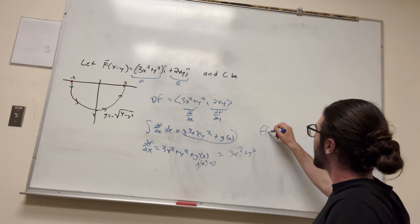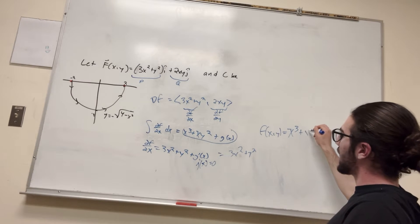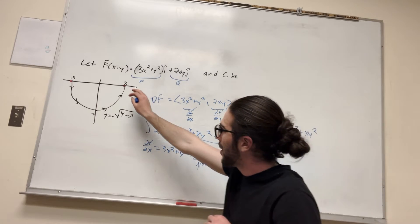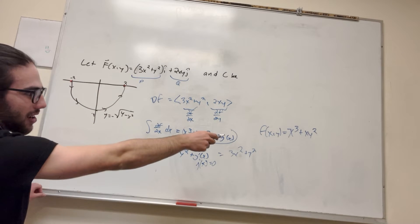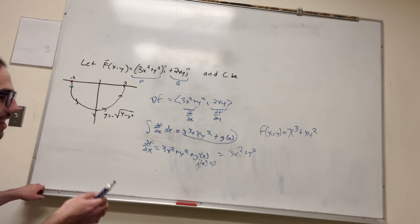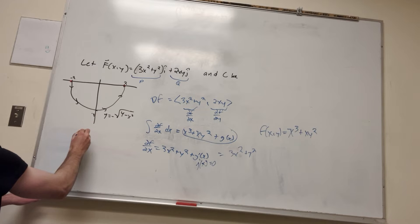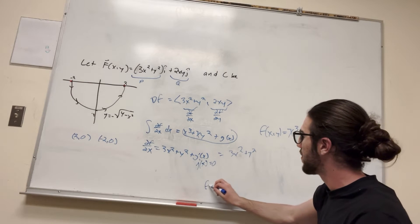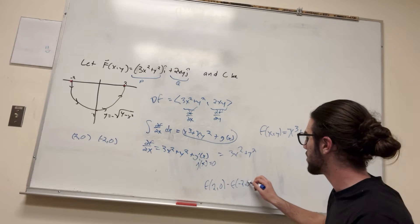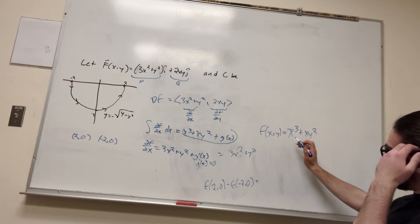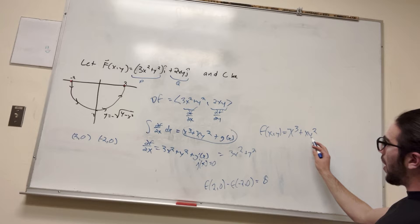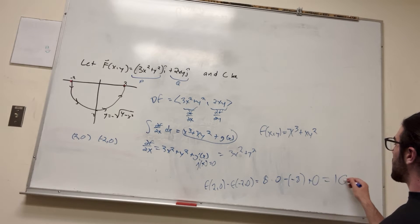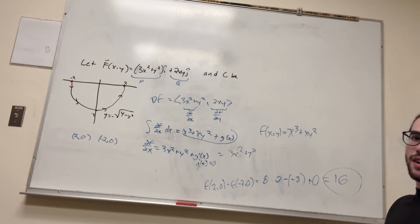So F(x, y) equals x³ + xy². Now we can use our fundamental theorem: take the value at our endpoint and subtract the value at our starting point. Our endpoint is (2, 0) and our starting point is (negative 2, 0). So it's F(2, 0) minus F(negative 2, 0). F(2, 0) is 8 plus 0 = 8. F(negative 2, 0) is negative 8 plus 0 = negative 8. So 8 minus negative 8 equals 16 — which is what we found earlier.